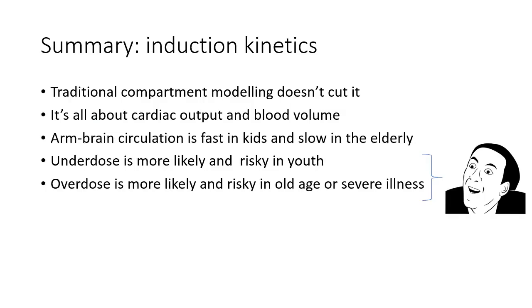In summary, traditional compartment modelling does not do a very good job of explaining what happens at intravenous induction. Cardiac output and blood volume are the most important variables. The arm-brain circulation time is very fast in children and very slow in the elderly. An underdose is both more likely to happen and more risky in youth, while an overdose is both more likely and more risky in old age or in severe illness.